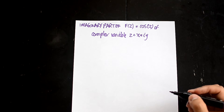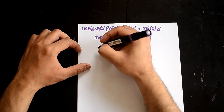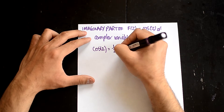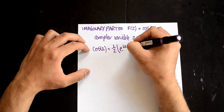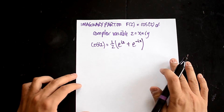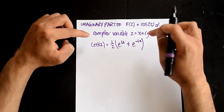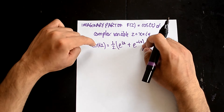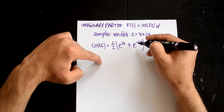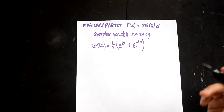The first thing we're going to start with is that cos z equals one half of e^(iz) plus e^(-iz). This is something you need to remember. And then for sin z, it would be one half of e^(iz) minus e^(-iz). So these are two formulas that you need to remember.